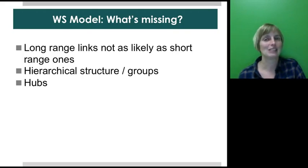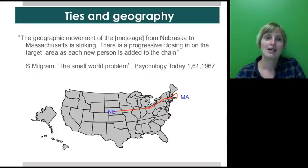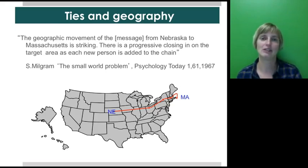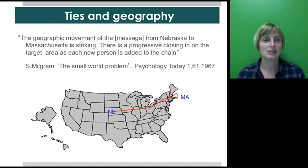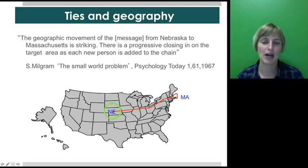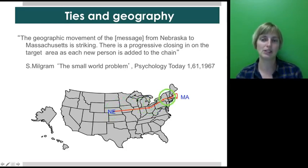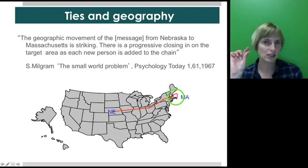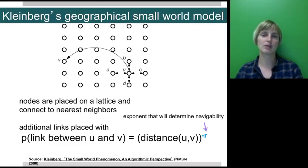Here's a hint as to how geographic ties may be distributed, from the original paper by Milgram. He says: the geographic movement of the message from Nebraska to Massachusetts is striking — there's a progressive closing in on the target area as each new person is added to the chain. It seems like the message makes large hops initially, and then as it gets closer it homes in using short, nearby ties. John Kleinberg proposed a model of small worlds laid out on a lattice.